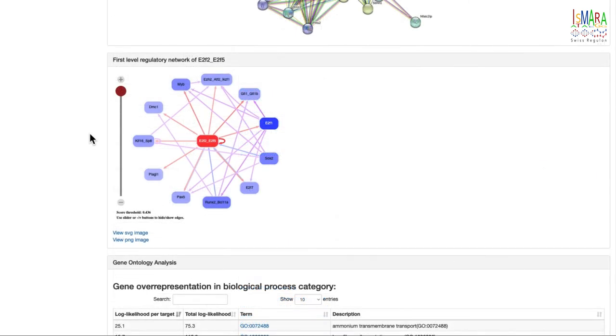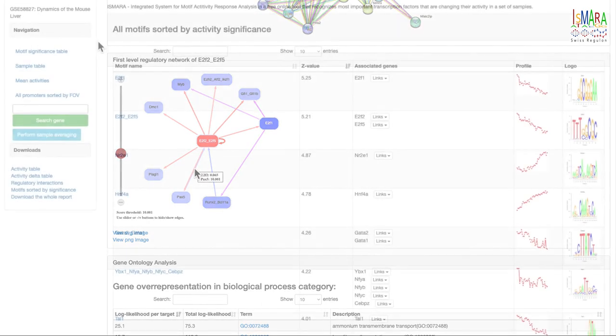Finally, of particular interest are the predicted regulatory interactions among the transcription factors themselves. In this picture, E2F2_E2F5 motif is shown in the center, and all predicted interactions are shown where this motif targets the promoter of another transcription factor, or where another transcription factor targets the promoter of either E2F2 or E2F5. Moving the slider selects interactions over a target score cutoff, and mousing over links shows the target score of the link.